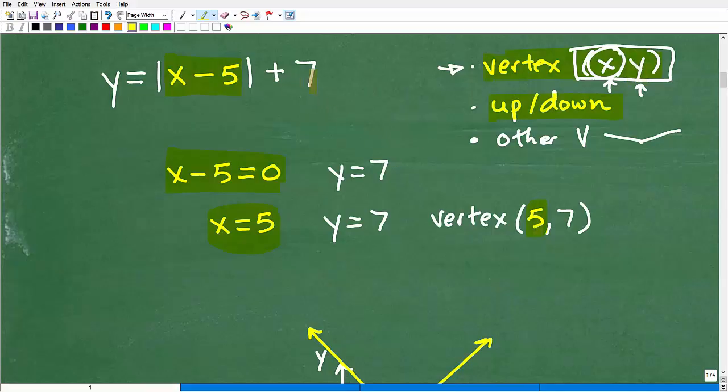How about y? Well, y is even easier. Whatever this number is right here, hanging out at the end of the absolute value equation, that is what y is equal to. So y is equal to 7. So super easy. Now, if there was no number, let's say it was this, you're like, wow, there's no number there. Well, it would be 0. That would be plus 0. But in this case, we have a 7. So there's always something there. Sometimes it's a 0. So we know our vertex is 5, 7. I mean, how easy is that?